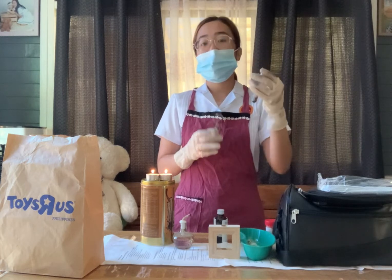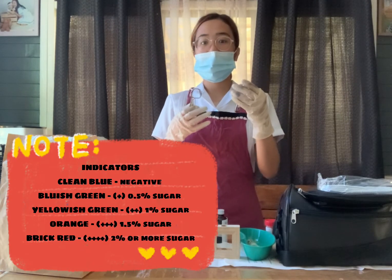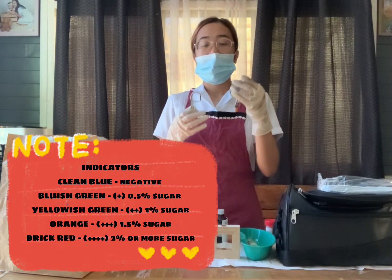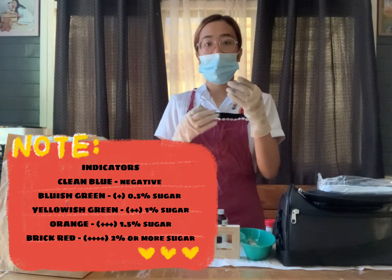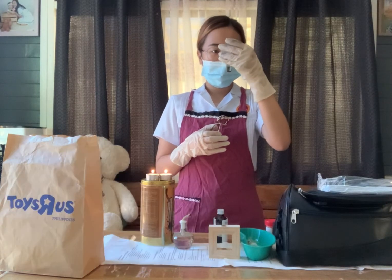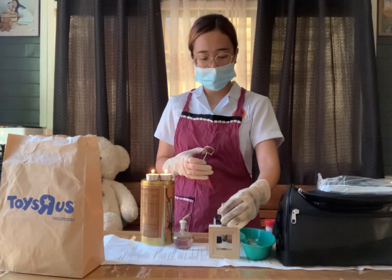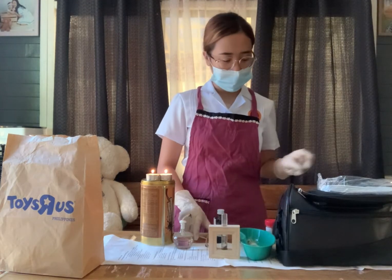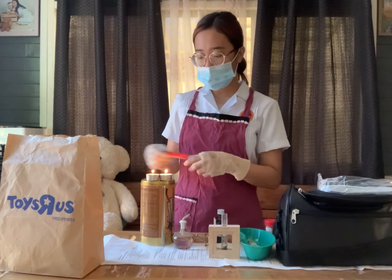The indicators are: clear blue, bluish green, yellowish green, brick red, and orange. After assessing if the urine sample has changed in color, turn off the fire.